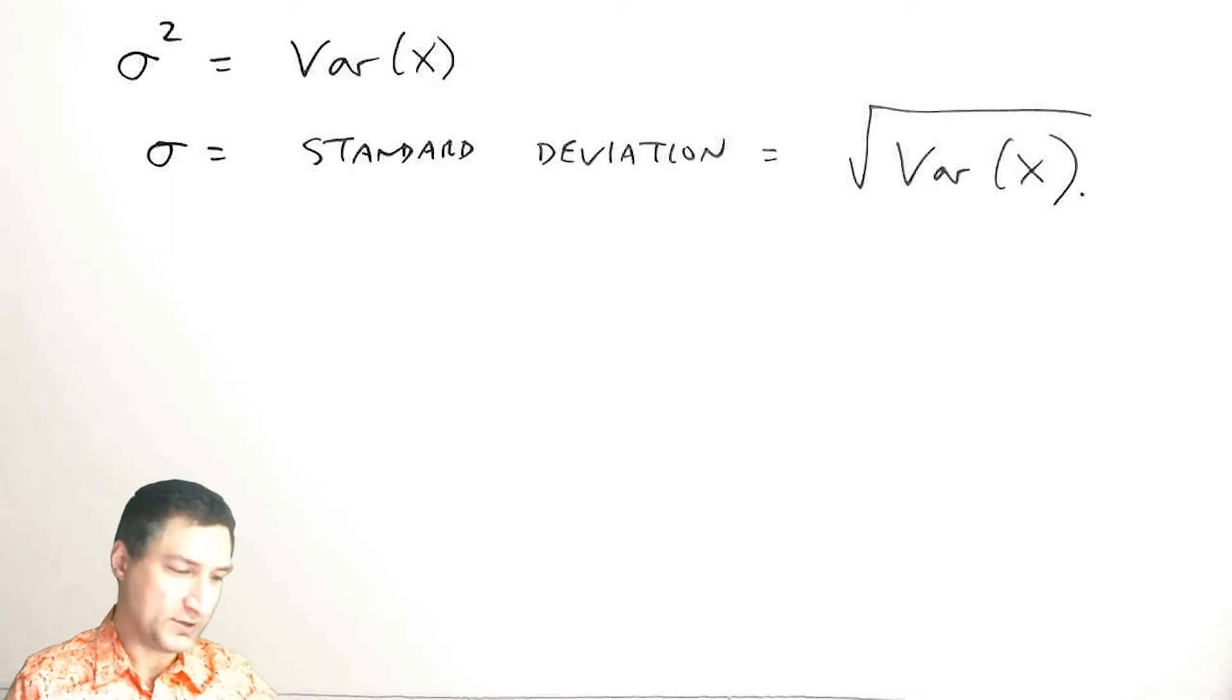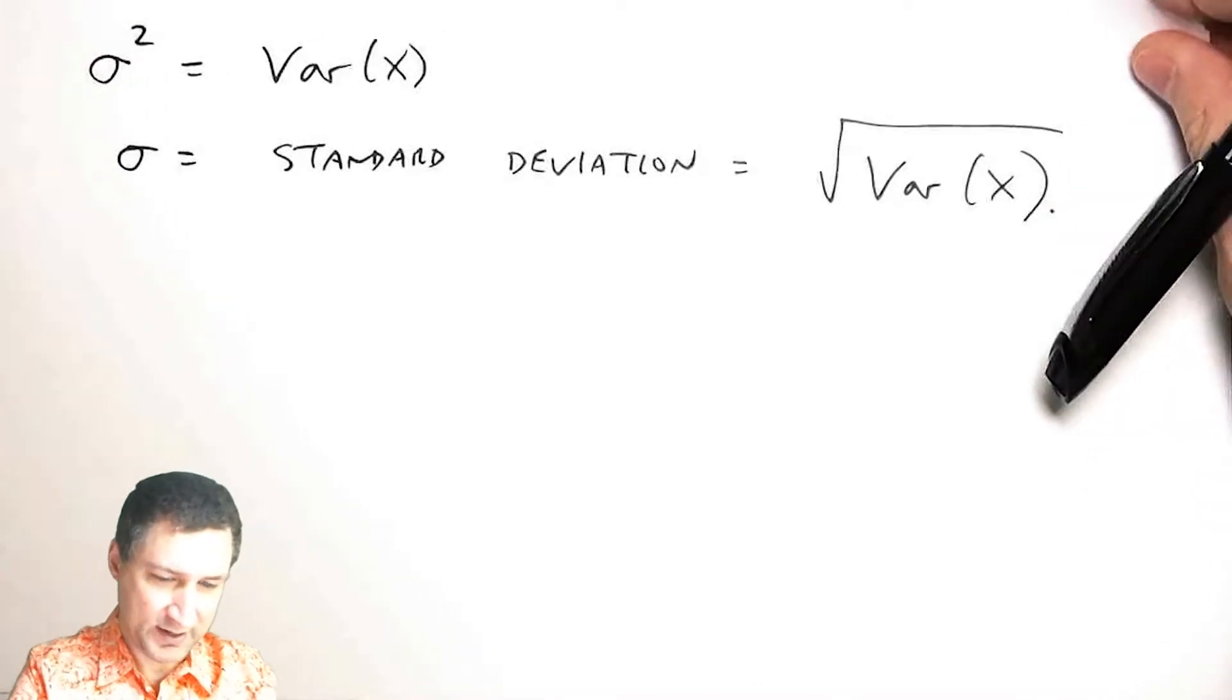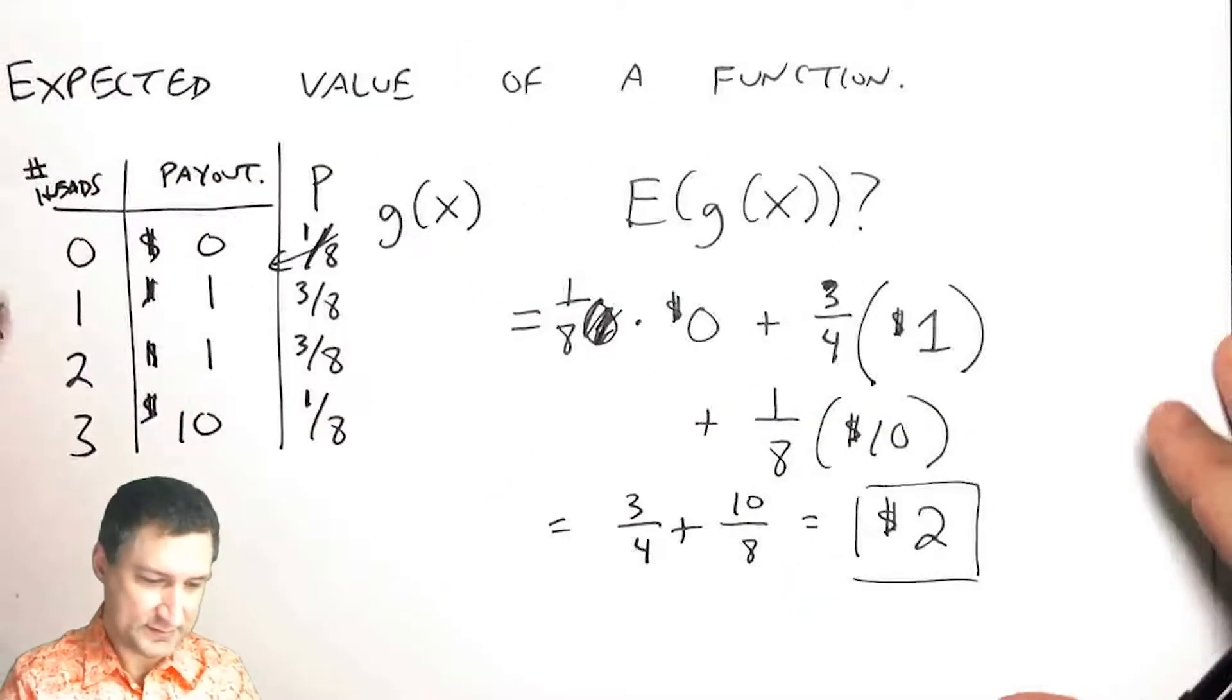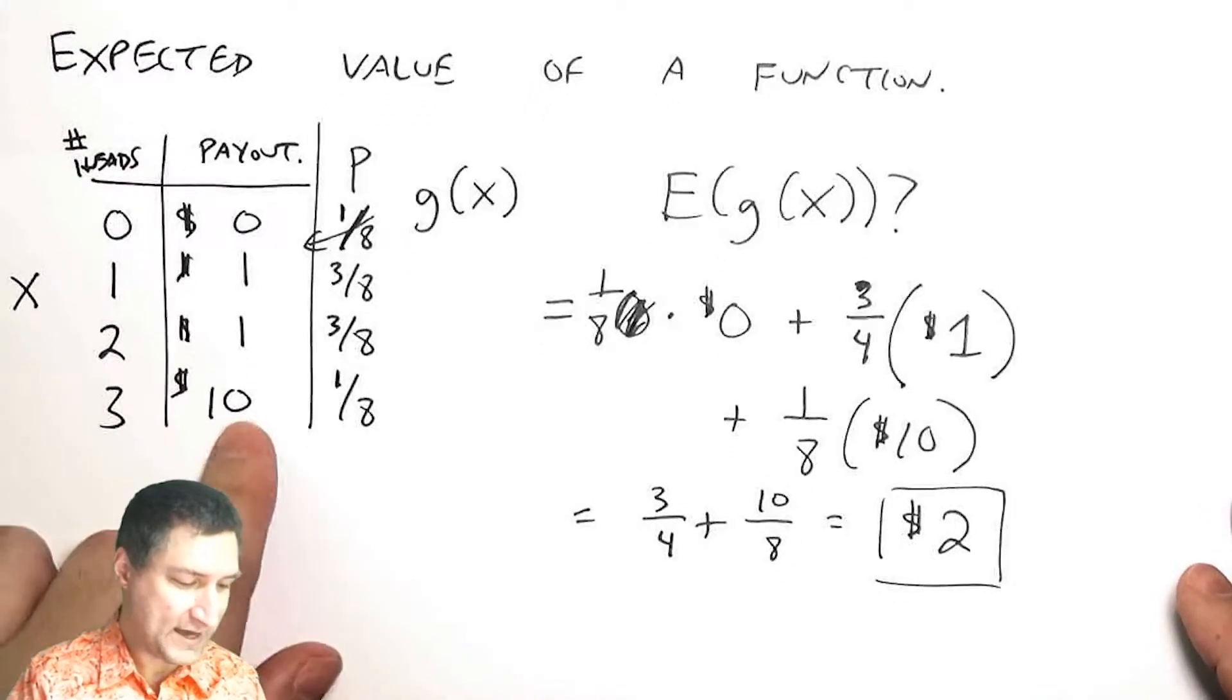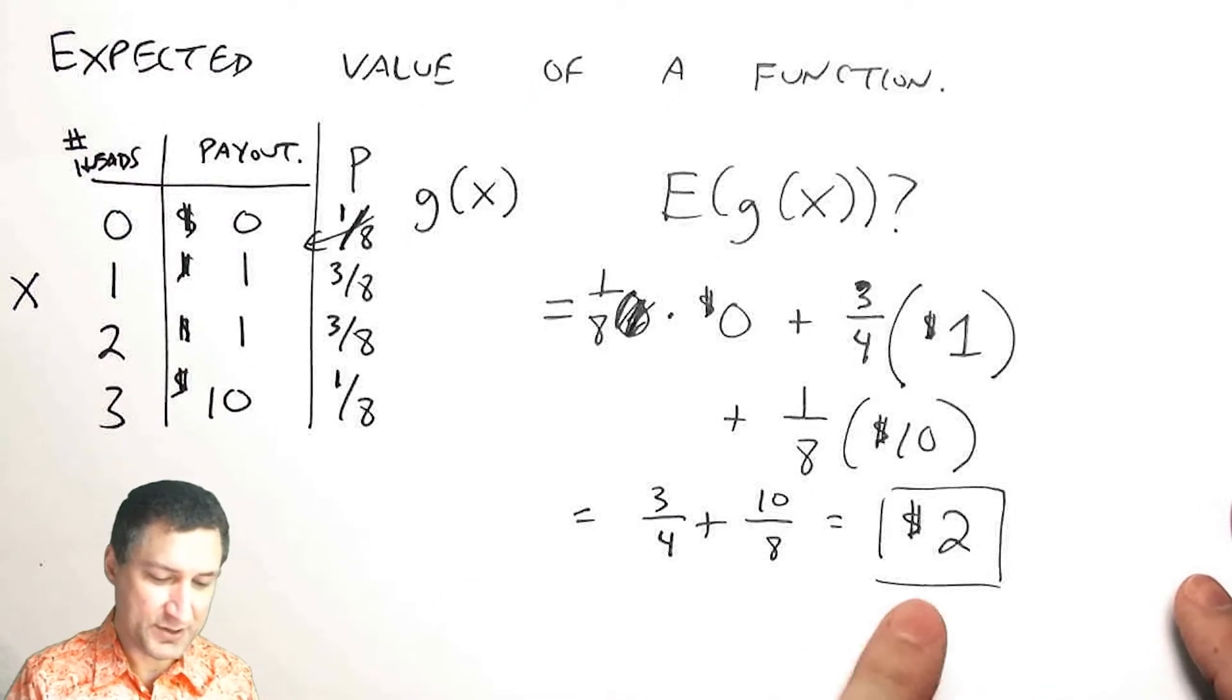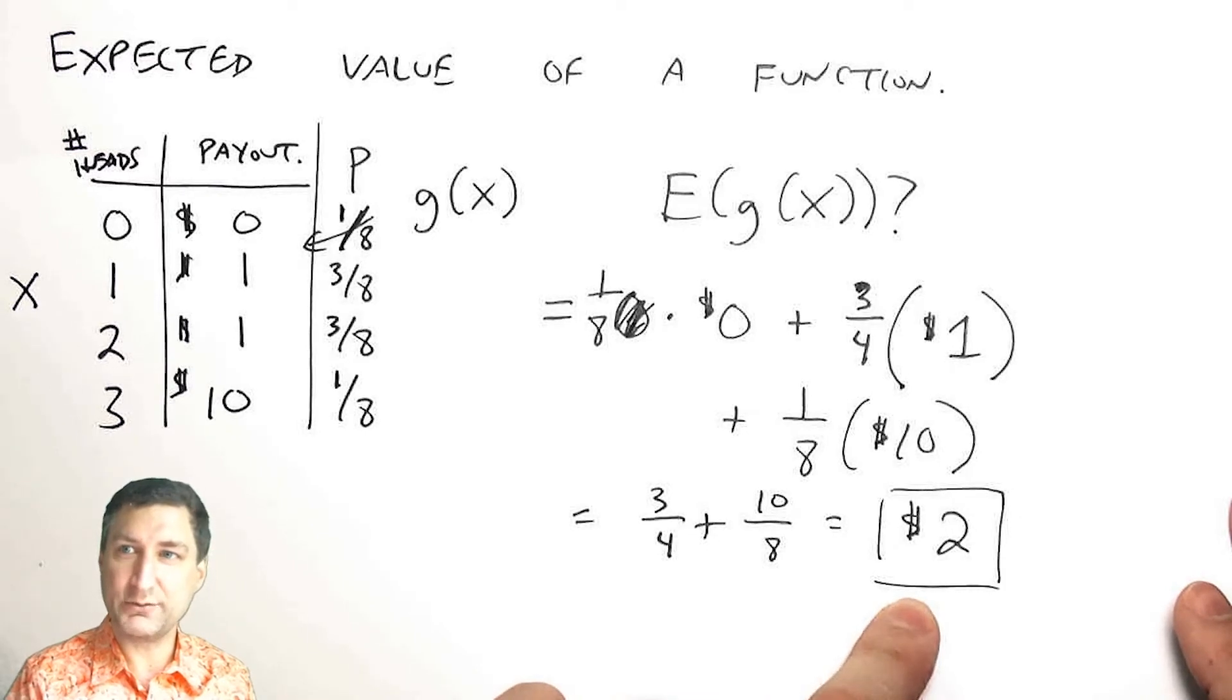Remember, a couple of lessons ago, we played this great game where I had a payout of a certain amount, and I computed that the expected value of that random variable was 2.